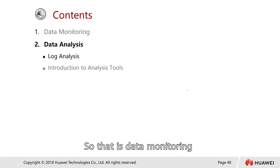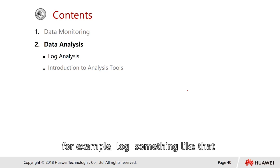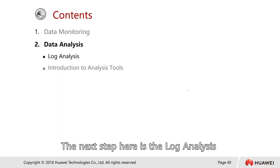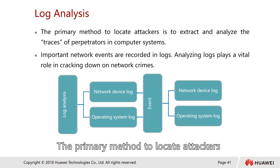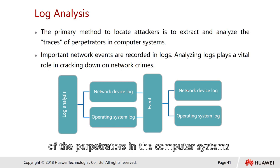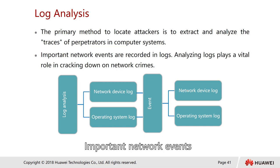So that is data monitoring — how we collect information. Once we have all the information, such as logs, the next step is log analysis. Log analysis is the primary method to locate an attacker — to extract and analyze the trace of the perpetrator in the computer system. Important network events are recorded in the logs.